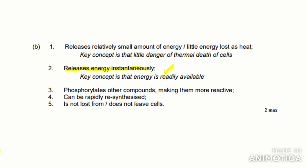Another point you could put is that it phosphorylates other compounds — the phosphate released in the hydrolysis of ATP phosphorylates other compounds making them more reactive. It can be rapidly resynthesized, and also it does not leave cells, which we wrote. So we get the two marks. Note: if you put more than two points, you don't get more than two marks — you can only get a maximum of two.